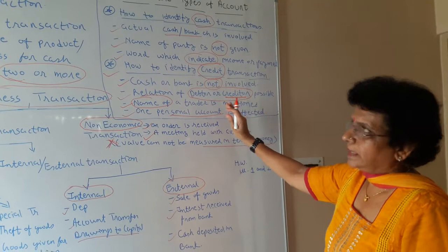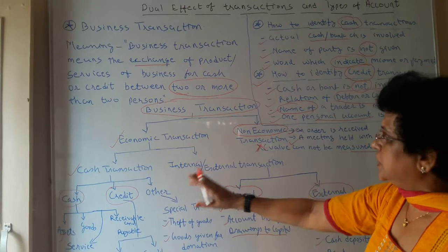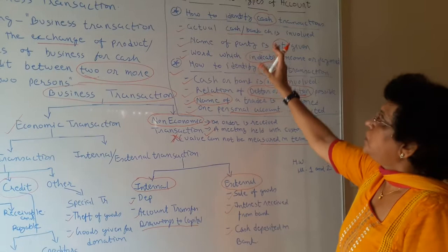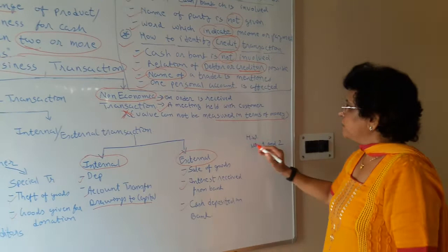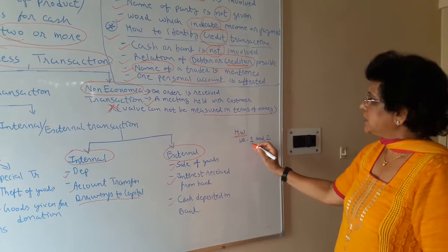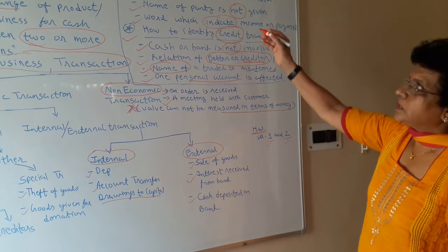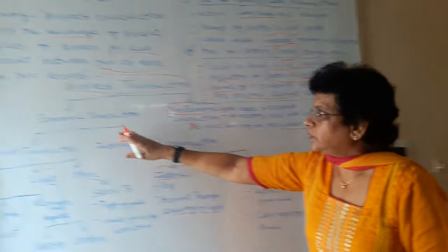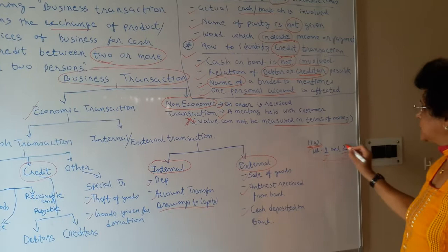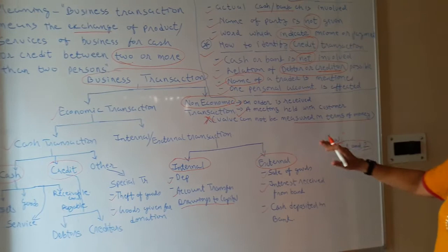What we have learned today: the meaning of transaction, business transaction, all its types, how they affect the books of account, and how to identify cash or credit transactions. Based on this, you have two illustrations in chapter 2 — illustration 1 for identification of whether a transaction is cash or credit, and illustration 2 also based on cash and credit transactions. All the classification — economic, non-economic, cash, or credit — is covered by these two illustrations. You revise, and after referring to this, you will easily be able to answer how to identify a transaction. I hope you all understood. Thank you.